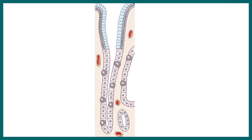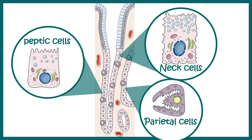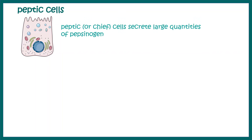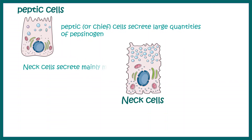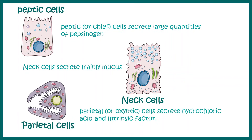In the gastric glands there are different types of cells such as neck cells, parietal cells, and peptic cells. Each of these cells help in different types of secretions, which are combinedly known as gastric secretion. For example, the peptic cell or chief cell secretes large quantities of pepsinogen, an enzyme that helps in protein digestion. Neck cells generally secrete mucus.